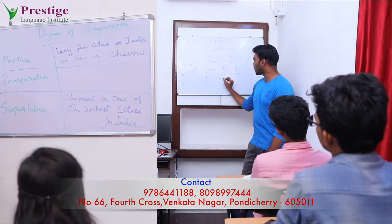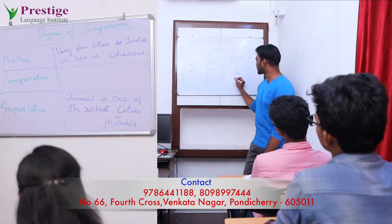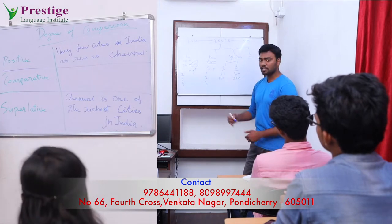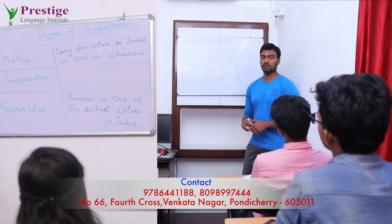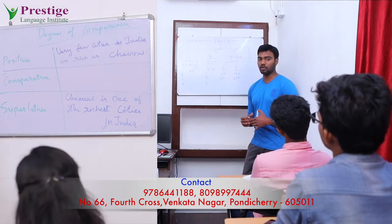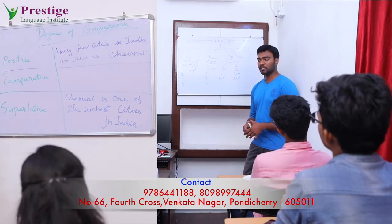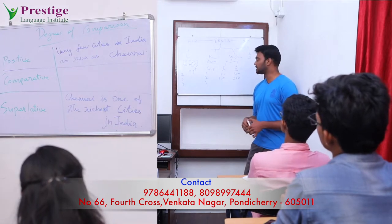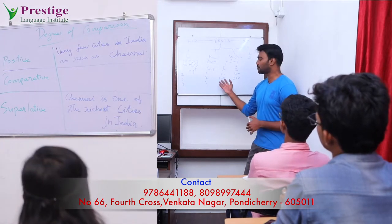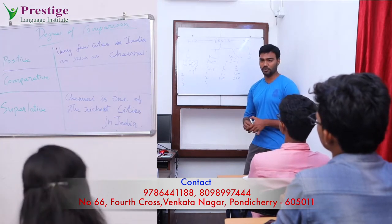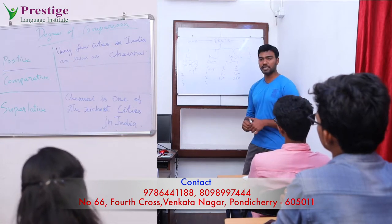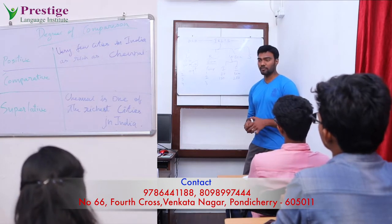For writing, Task 1 requires you to write 150 words and Task 2 requires 250 words. Task 1 is an academic report where you will be given a pie chart, a graph, or something similar, and you have to write a report on it. Task 2 is an essay, which can be of different types.